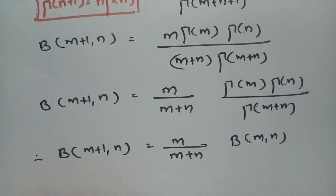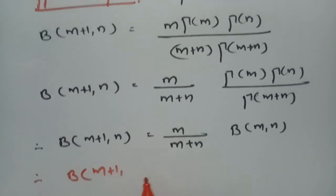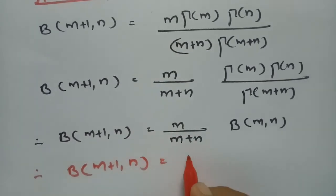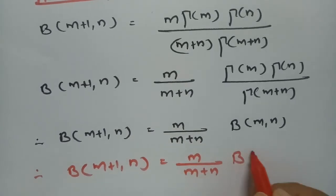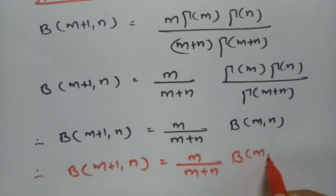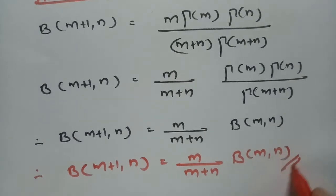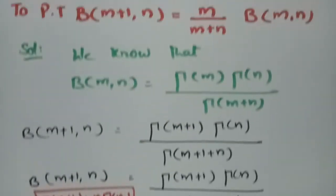Therefore, beta of m plus 1 comma n can be written as m by m plus n into beta of m comma n, and this is what we had to prove.